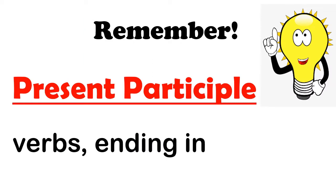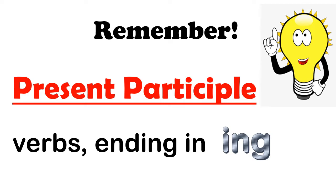Have you heard about present participle? Present participle is actually the form of verbs that end in -ing. Those verbs which end in -ing are called present participle verbs, and they are used in present continuous tense. Remember, you have to use the present participle form of the verb in present continuous tense.